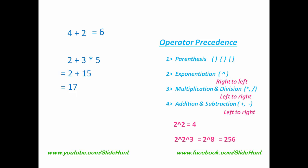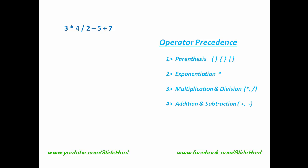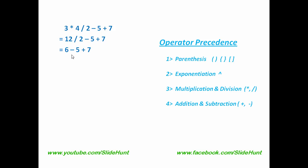Let's evaluate another complex expression. First we find the operator with the highest precedence. Multiplication and division have higher precedence than subtraction and addition. For this case, we follow the left to right rule. So we perform 3 multiplication 4 first, which equals 12. Then we perform 12 divided by 2, which equals 6. Now subtraction and addition have the same priority, so we follow left to right. 6 minus 5 equals 1, then 1 plus 7 equals 8.